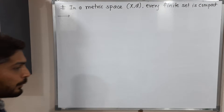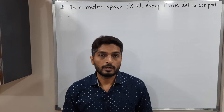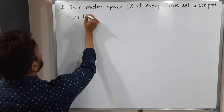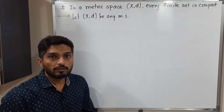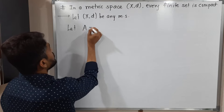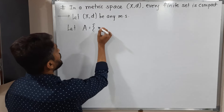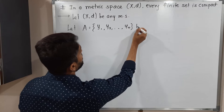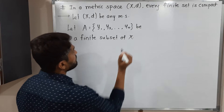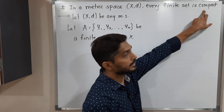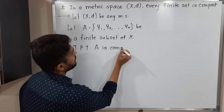Hi everyone. In this video we are going to discuss this result: in any metric space XD, every finite set is compact. So let us consider a metric space XD, and we have a finite subset of X. Let A = {y1, y2, ..., yn} be a finite subset of X with n number of elements. We have to prove that A is compact.